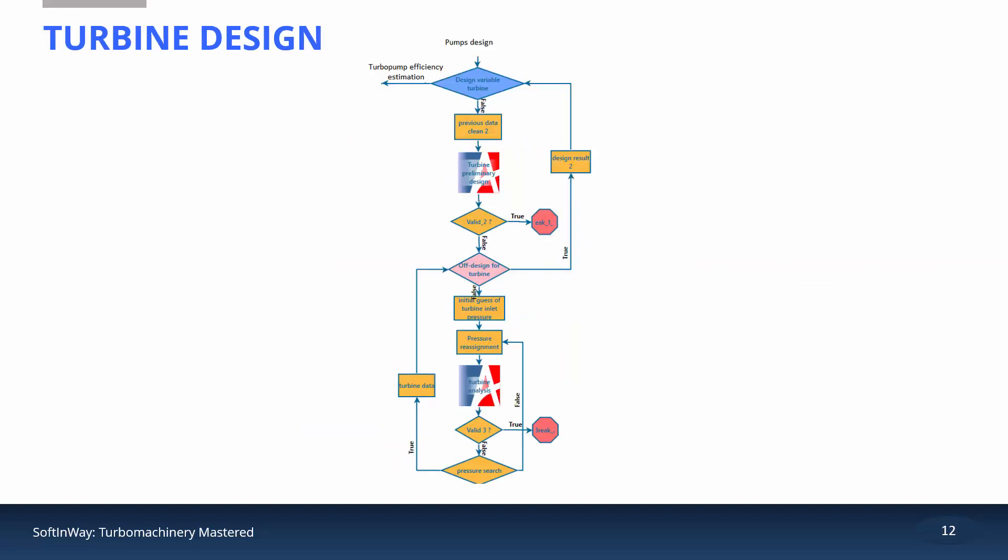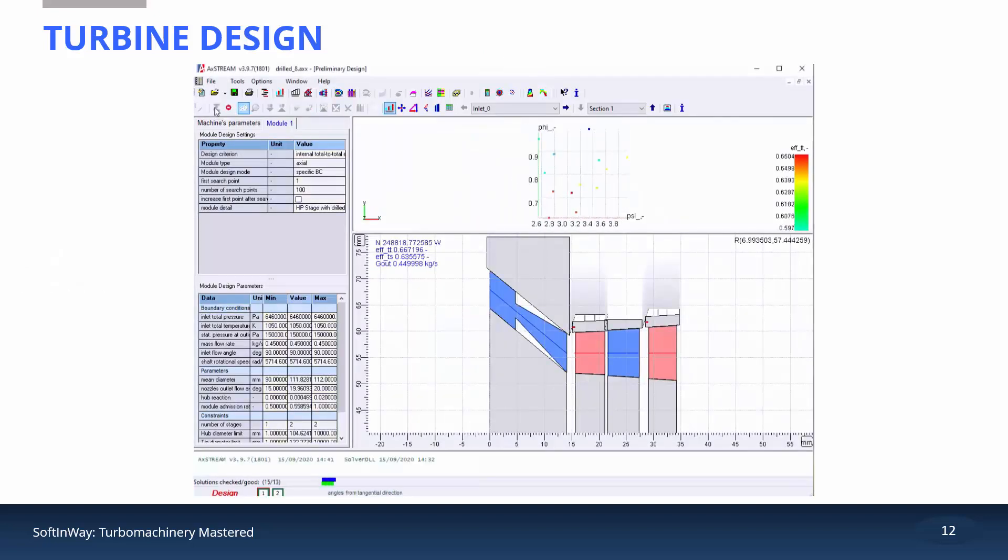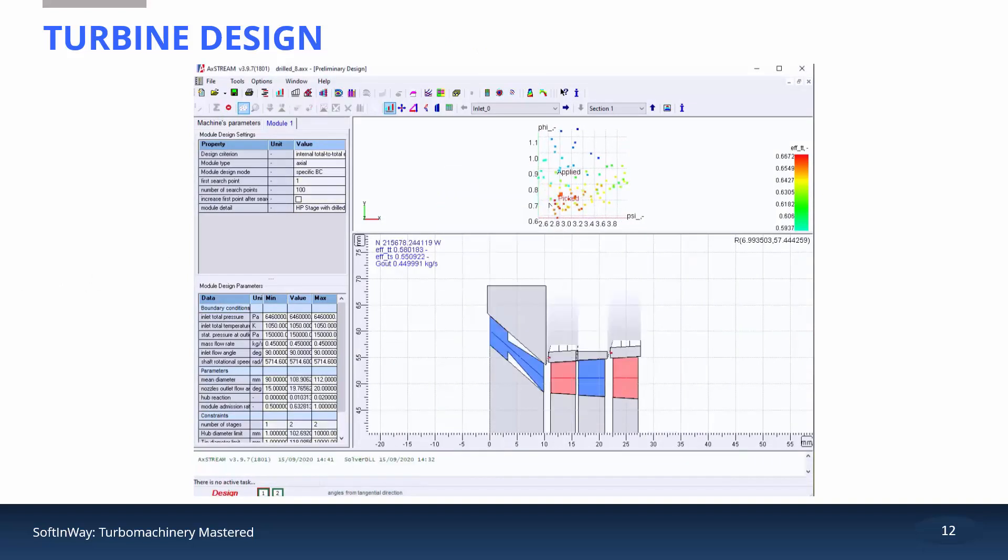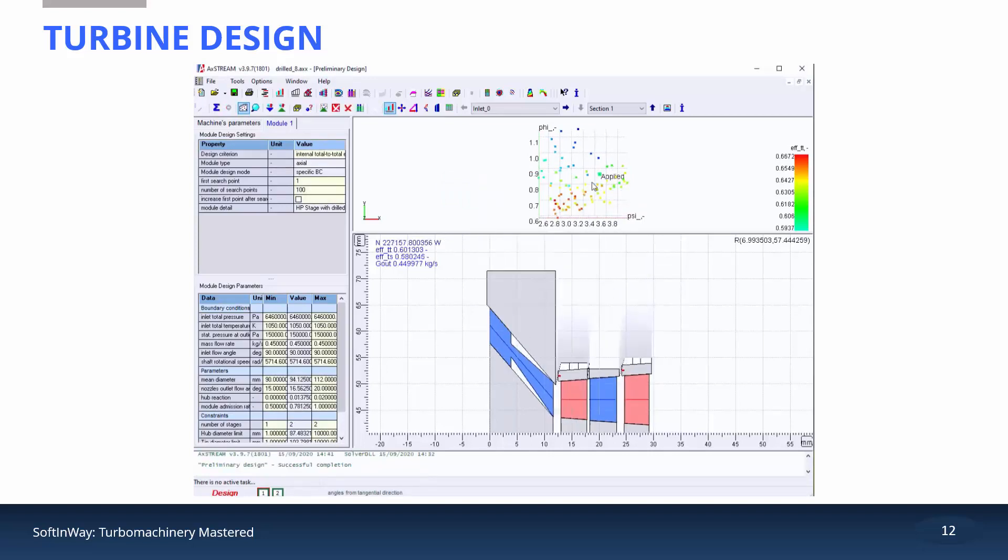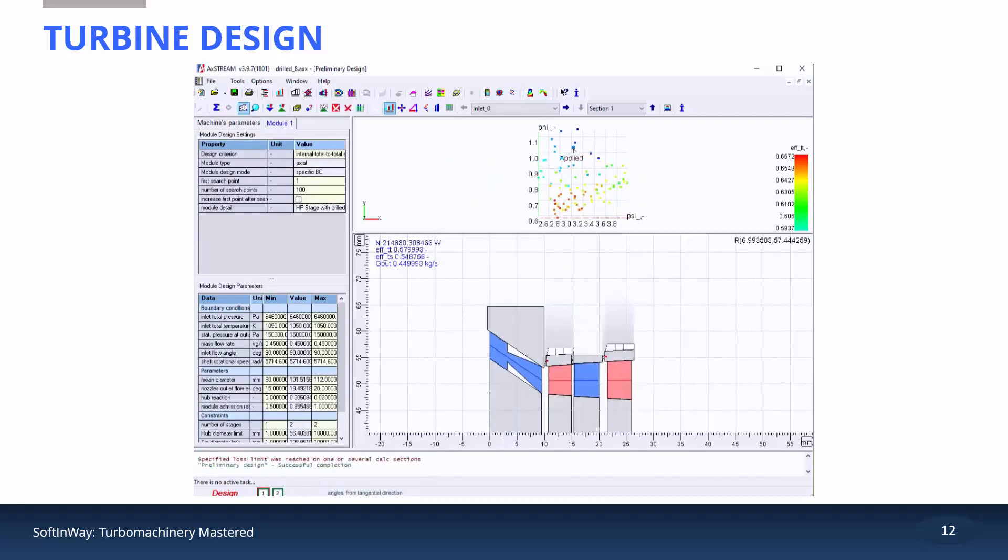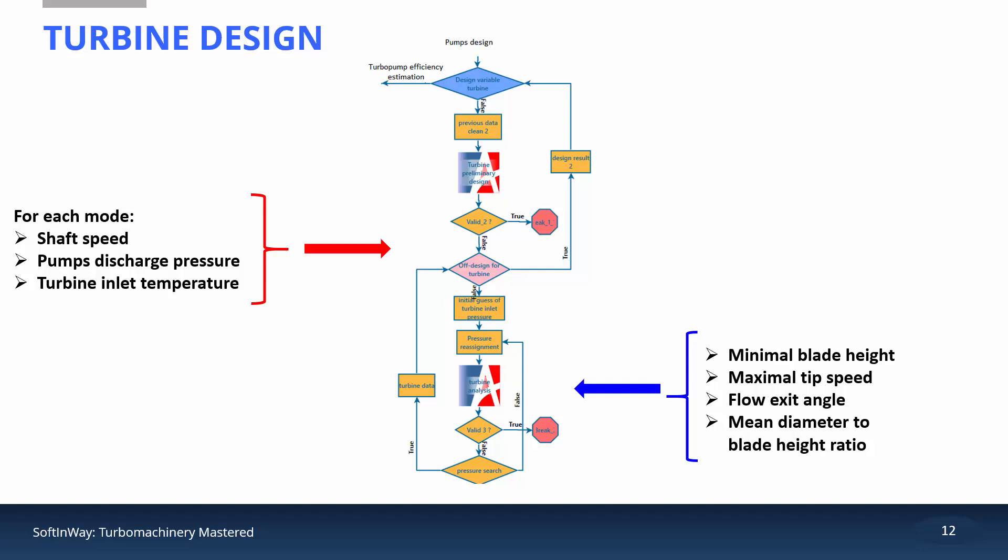Before the turbine design can be started, the required power should be determined for each mode based on the power consumption of both pumps. The turbine design and analysis procedures are close to the ones presented for the pumps. In the design phase, limitation on the minimal blade height, flow exit angle, mean diameter to blade height, and tip circumferential velocity are considered to sort out reasonable turbine geometries at the design point. The required power is achieved by iterating on the turbine flow rate. The design that provides the required power at all modes with minimal mass flow rate is accepted as the optimal geometry for the given oxidizer and fuel pumps. If no turbine design was found, a new design of an oxidizer pump is started.